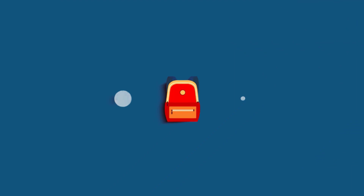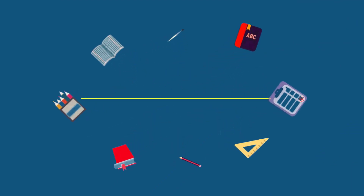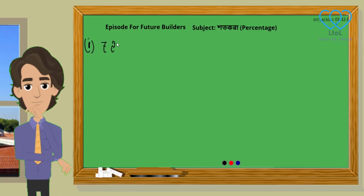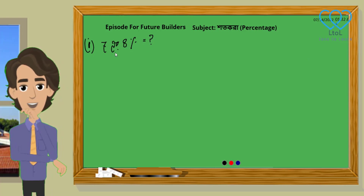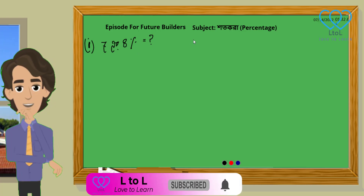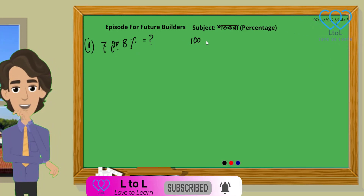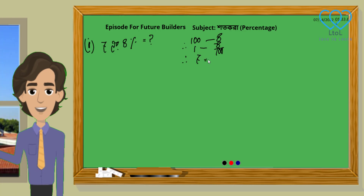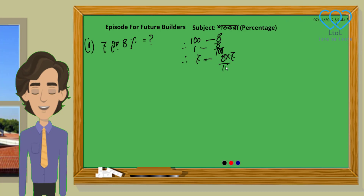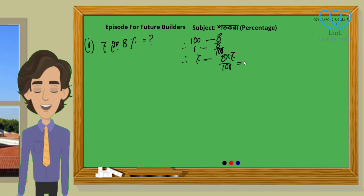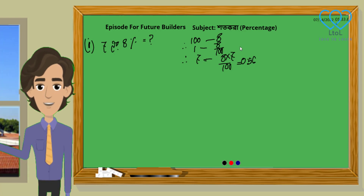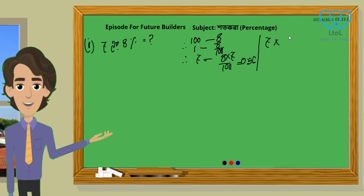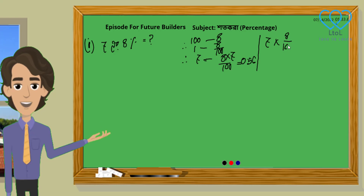Let's start with number one. Seven, eight — 88 percent. What is 78.88 percent? Eight percent.